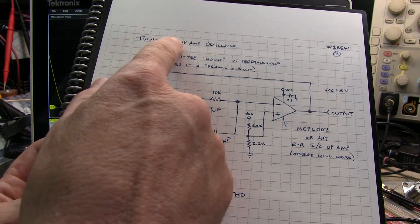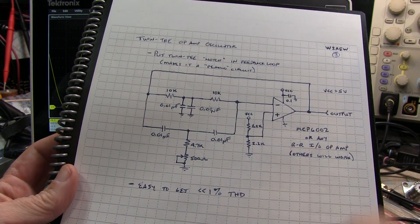In my previous video, we took a look at this twin-T op-amp oscillator to produce a nice sinusoidal output.